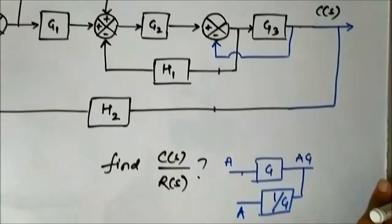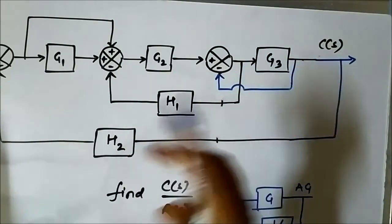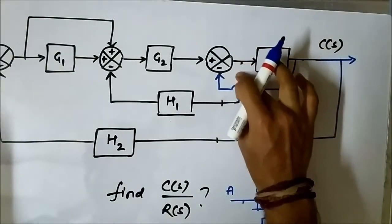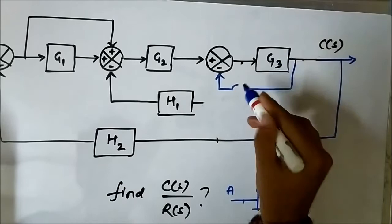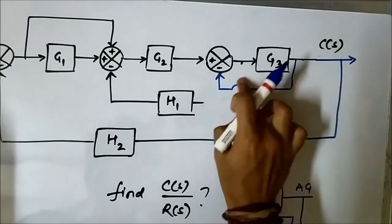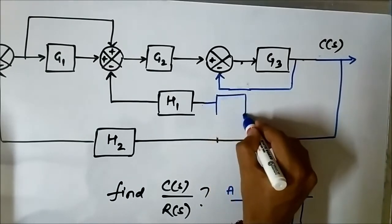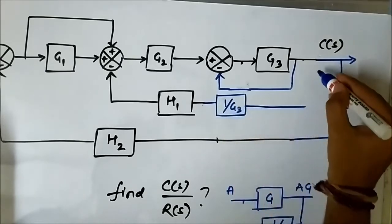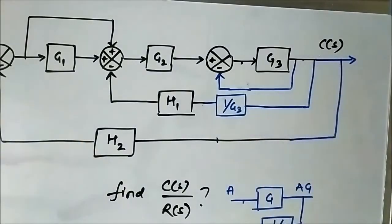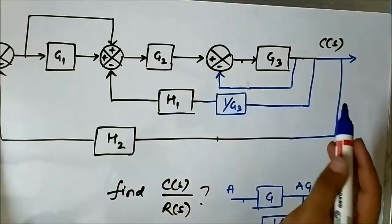In order to shift this takeoff point from after G3 to before it, we have to use a 1/G3 block here. So in that case the signal will be A·G3 × 1/G3 = A, giving us the same signal.